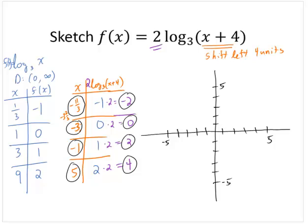All right, now, since it's shifted left 4, I know that I have a vertical asymptote at x equals negative 4.